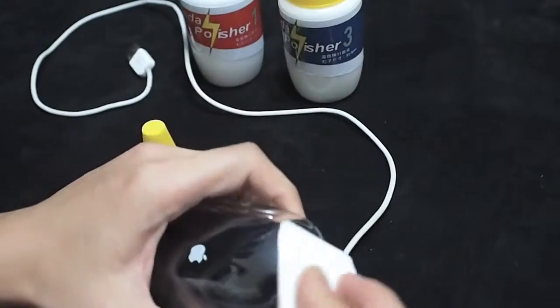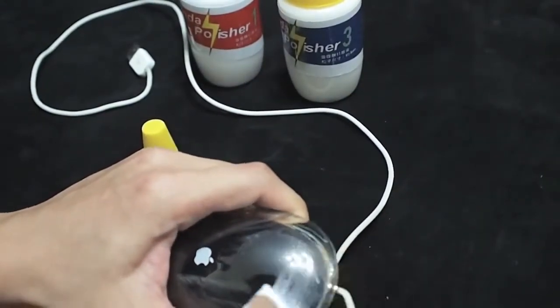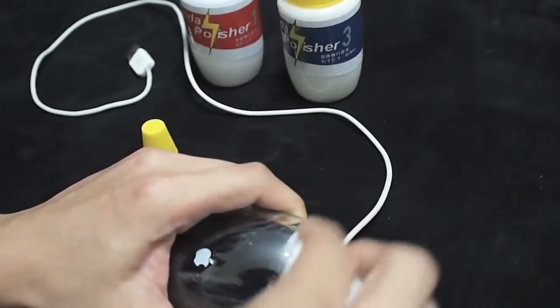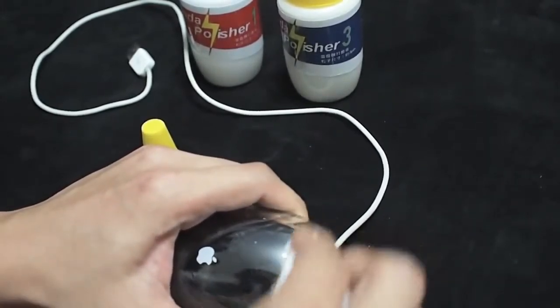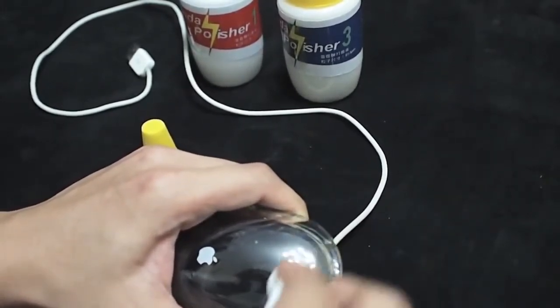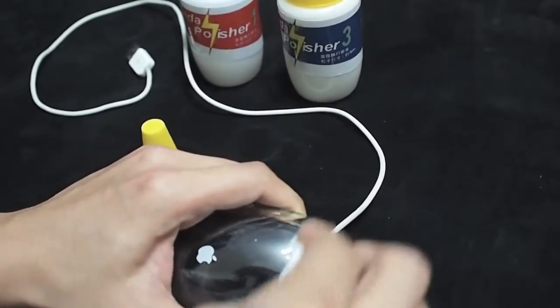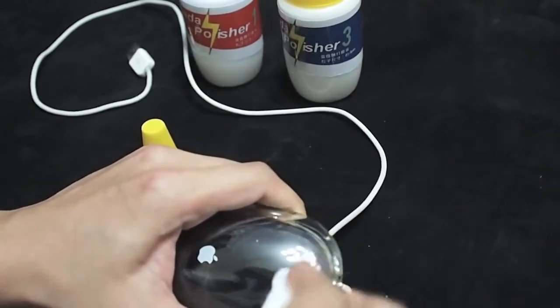And then we wipe the surface with scratches back and forth. We don't need to wipe over all the surface of the mouse because we have to concentrate on a particular area before we proceed to another area.